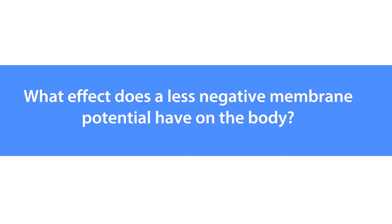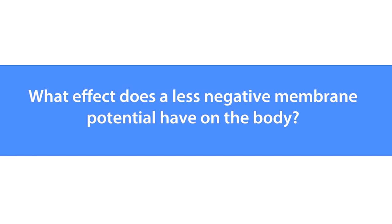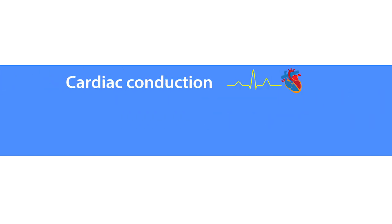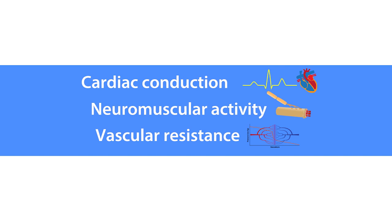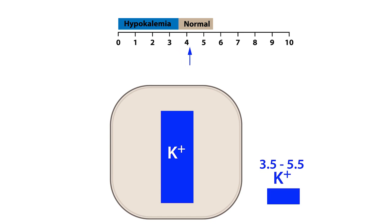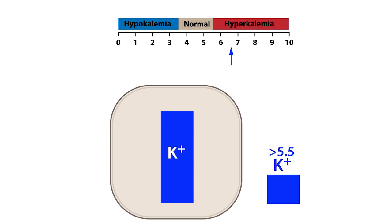So what effect does a less negative membrane potential have on the body? Well, making the membrane less negative makes cells less excitable, which can have a profound effect on cardiac conduction, neuromuscular activity, and vascular resistance, just to name a few. Therefore, maintaining extracellular potassium within its normal range is critical. An extracellular potassium concentration of less than 3.5 mEq per liter is considered low and is referred to as hypokalemia, while a concentration between 3.5 and 5.5 mEq per liter is considered normal, and greater than 5.5 mEq per liter is considered high and is referred to as hyperkalemia.